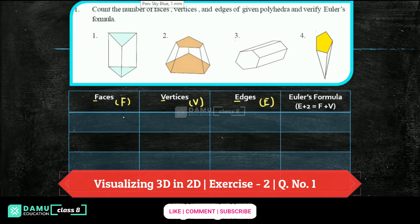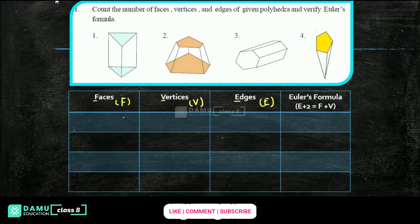So we are going to find the values of F, V, and E. For the first figure, faces are the surfaces enclosed by different lines. So how many faces are there? This is one face, 2, 3, 4, and the back side — so there are 3 triangular faces surrounding and top and bottom, that is 5 faces.